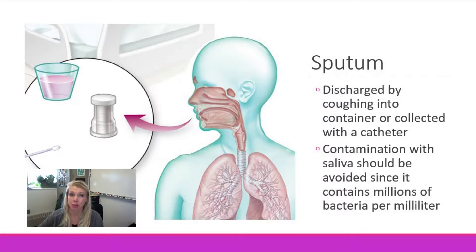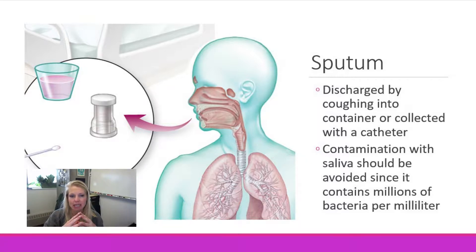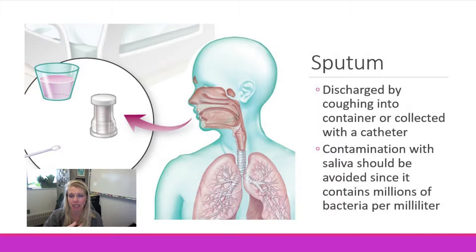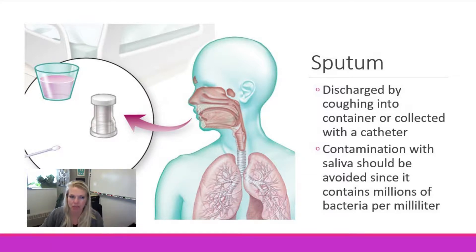The first sample to highlight is sputum — not 'sputum,' but sputum. This is not just spit; it is deep mucus from within the lungs and bronchi that is coughed up into a container, or can be suctioned out. Care should be taken to avoid saliva when collecting a sputum sample because the pathogen is down in the lower respiratory system. It is a viscous, semi-fluid sample — kind of gross — but it traps many microbes and is great for diagnosing pneumonia and similar conditions.